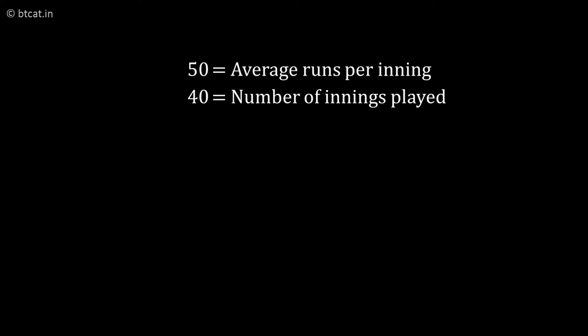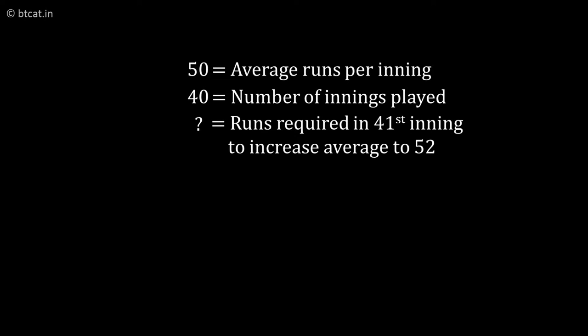If we are given a question: Sachin Tendulkar has played 40 innings and the average runs of Sachin per inning is 50. The question is how many runs should he score in his 41st inning so that the average increases by 2.